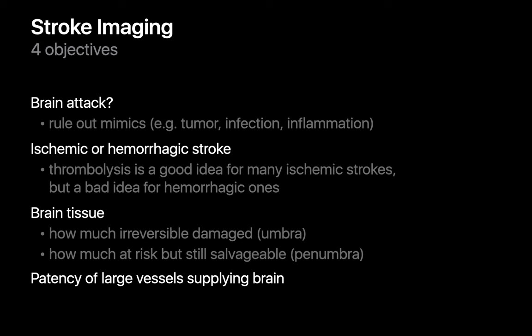Two, if the patient is having a stroke, establishing whether it's an ischemic or hemorrhagic stroke. While we may want to lyse a patient with an ischemic stroke, lysing them would probably be a bad idea if it's a hemorrhagic one. Three, establishing how much brain tissue is irreversibly damaged and how much of it is still salvageable. And four, establishing what the patency of the large vessels supplying the brain is.